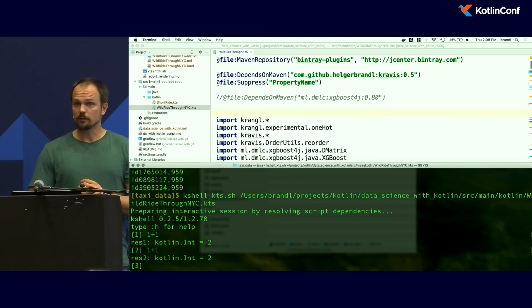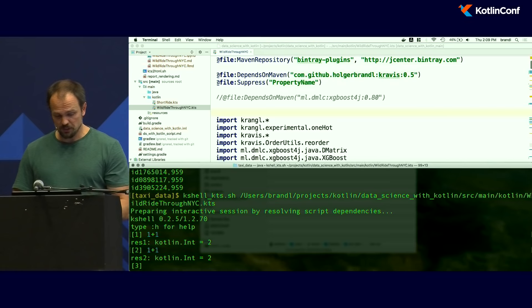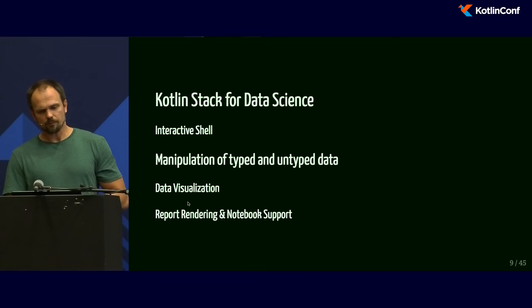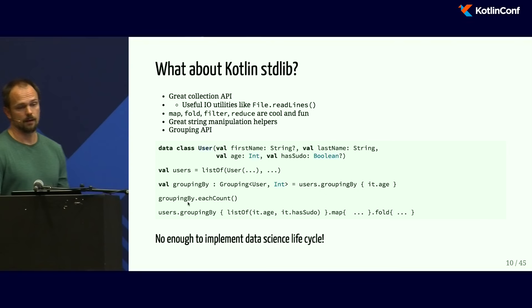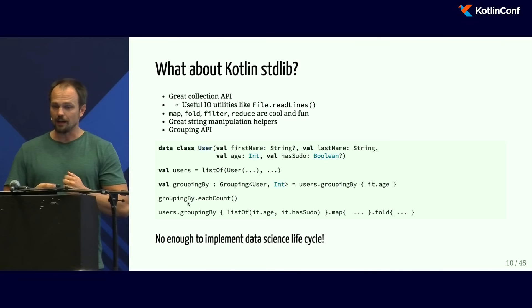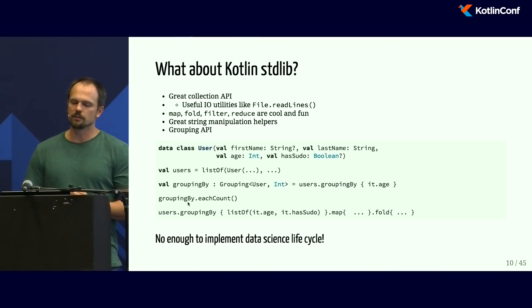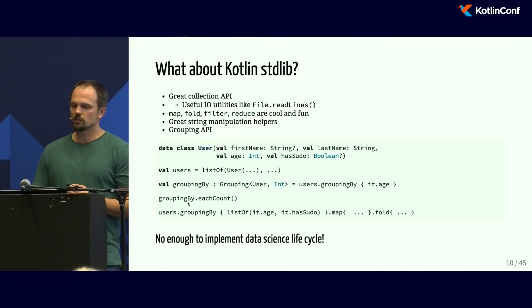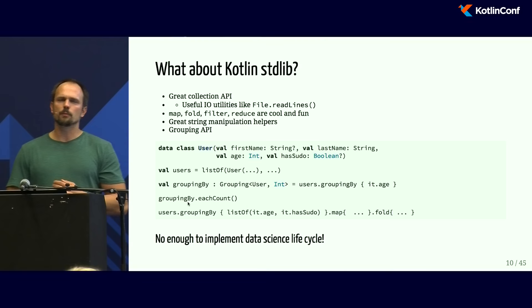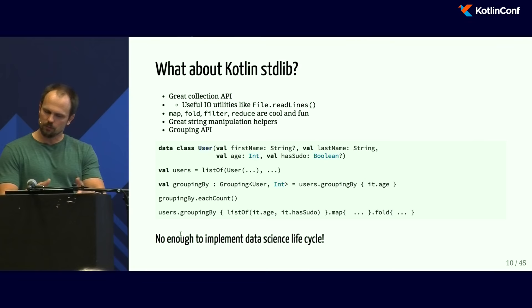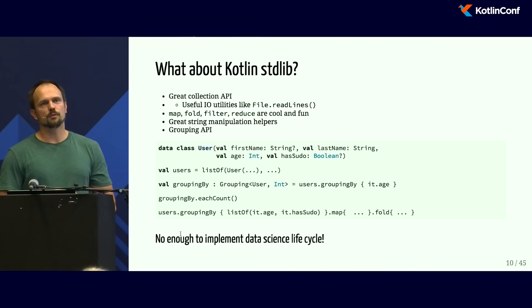We've mastered the first step — we have an interactive compute environment. Now, how can we deal with the data? There's still the question of how to bring these massive tables into our interactive environment. Let's talk about manipulating typed and untyped data. First, there's the Kotlin standard library, which is always a good starting point — it has useful I/O utilities, and functions to map, fold, filter, and reduce collections, plus a grouping API. But in my opinion, it's not sufficient to really implement the full data science lifecycle.